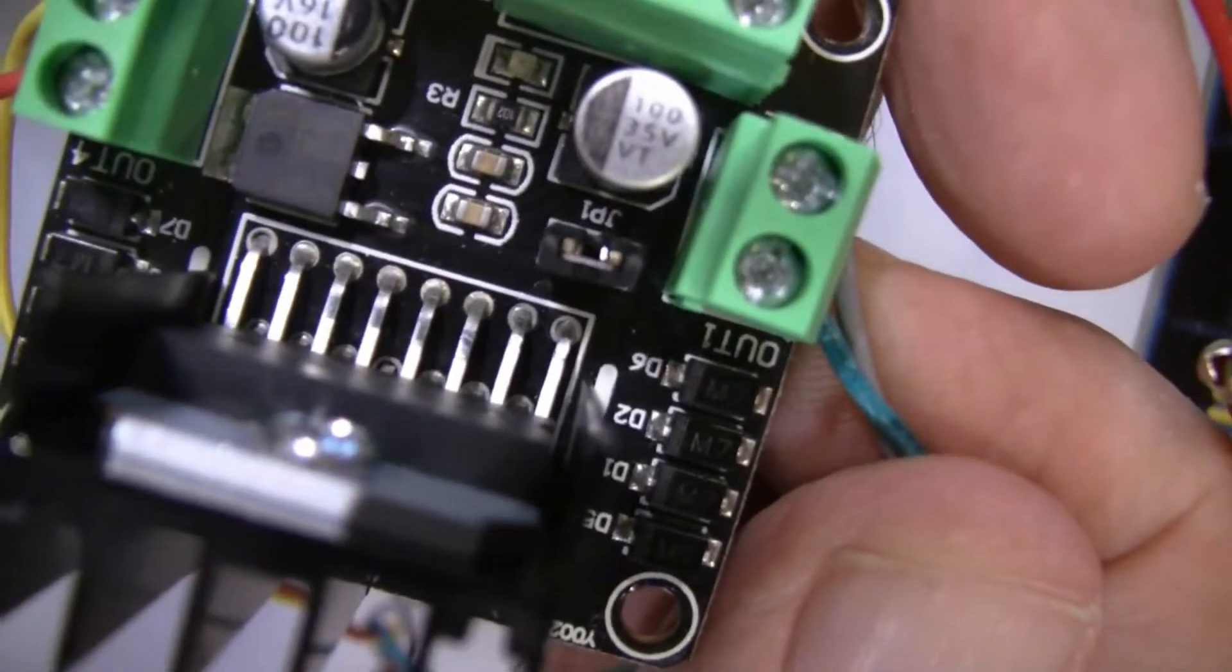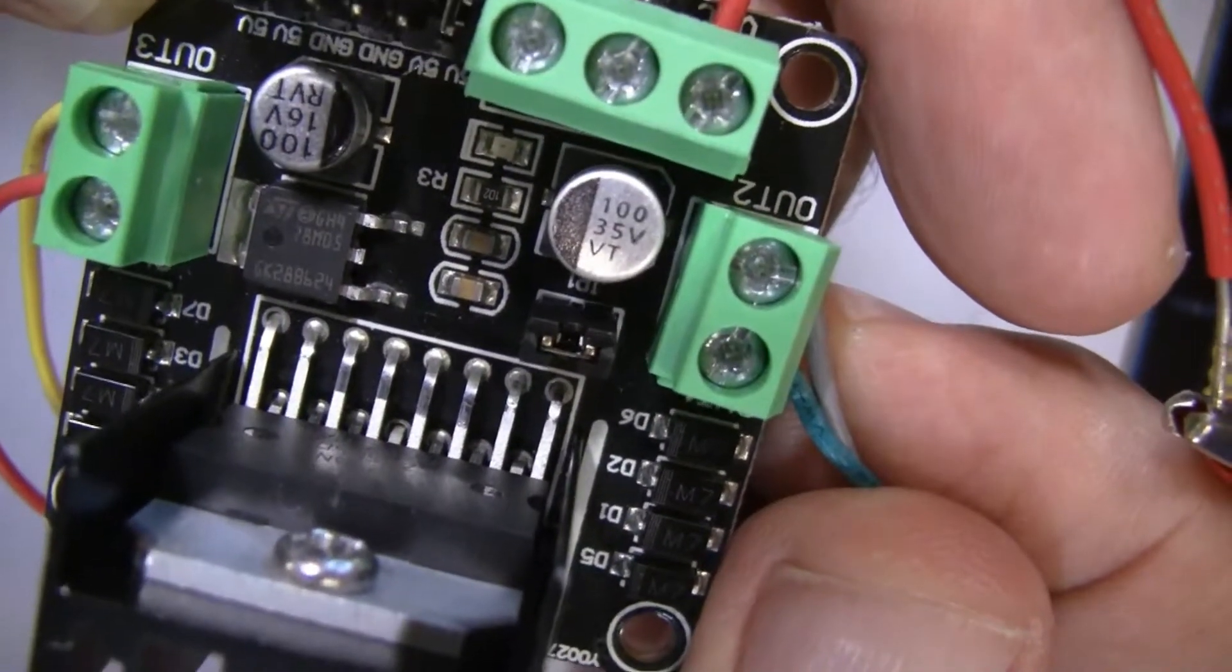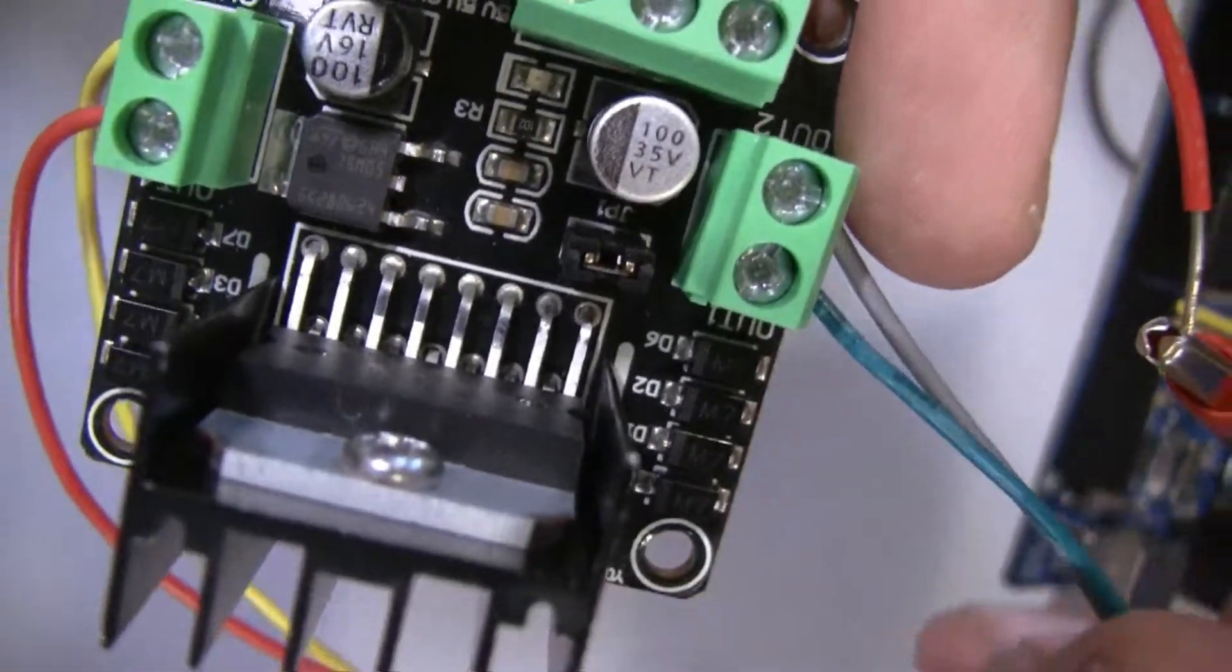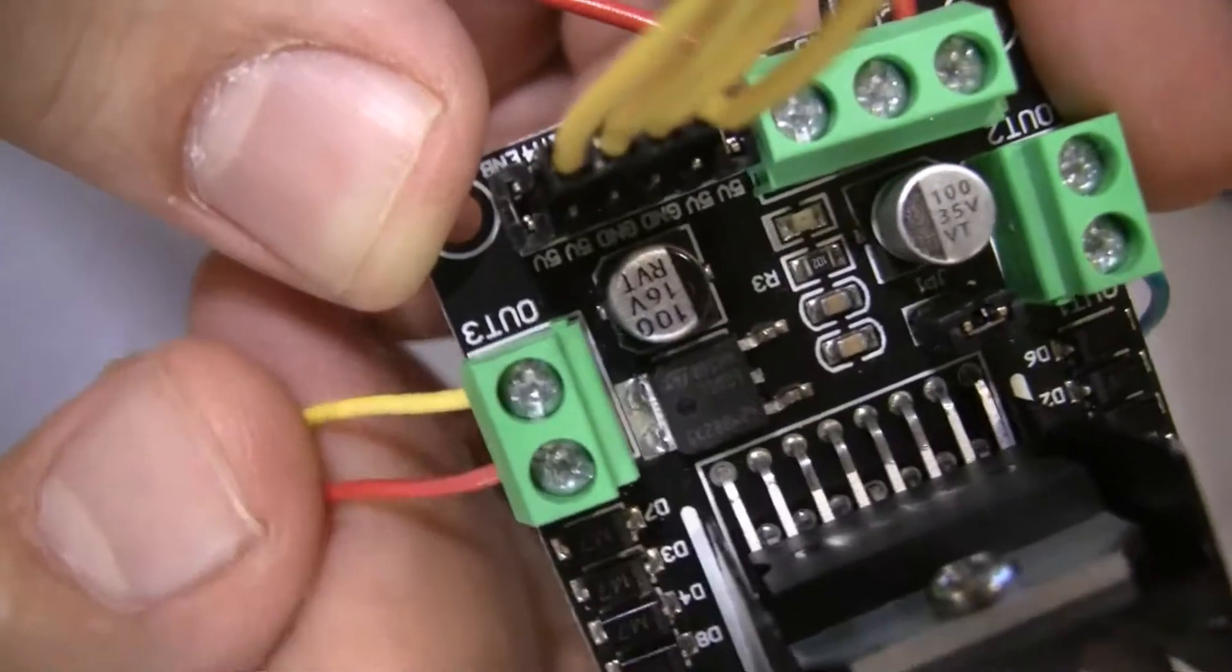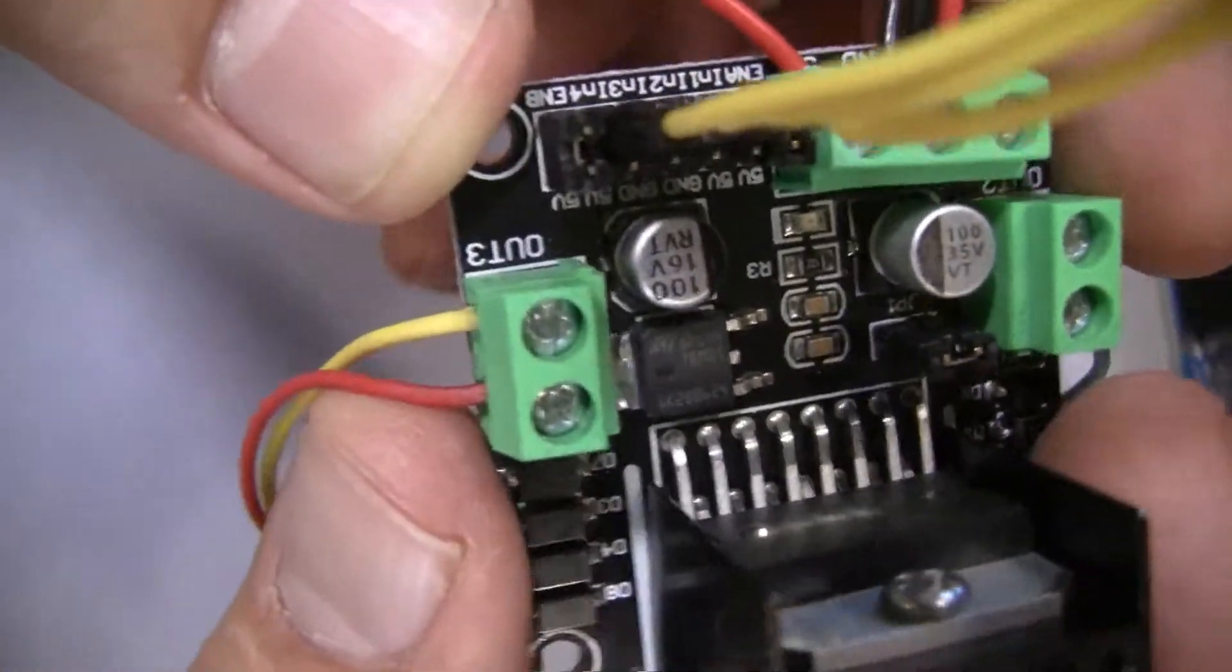Now connect the motor to the board. First get any pair and connect it into the OUT1 and OUT2. Then connect the second pair into the OUT3 and OUT4.